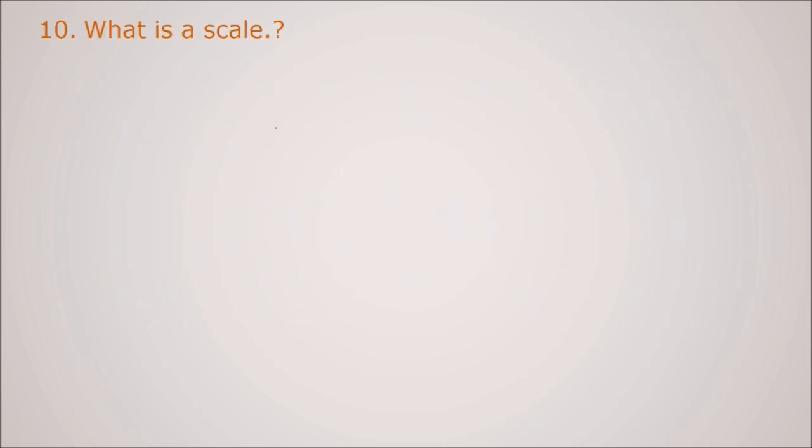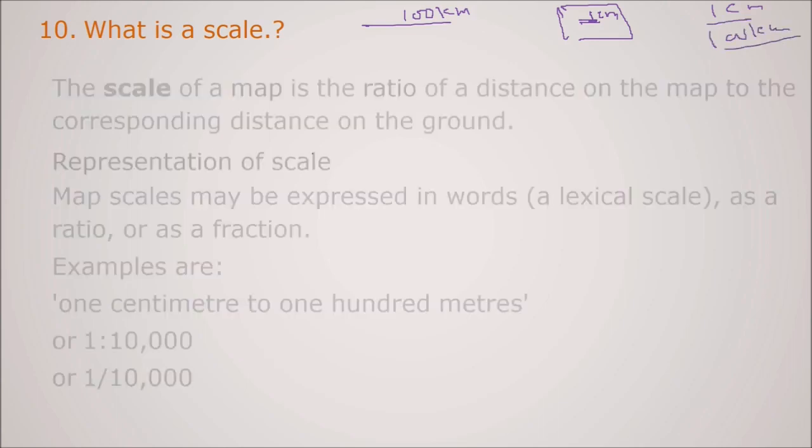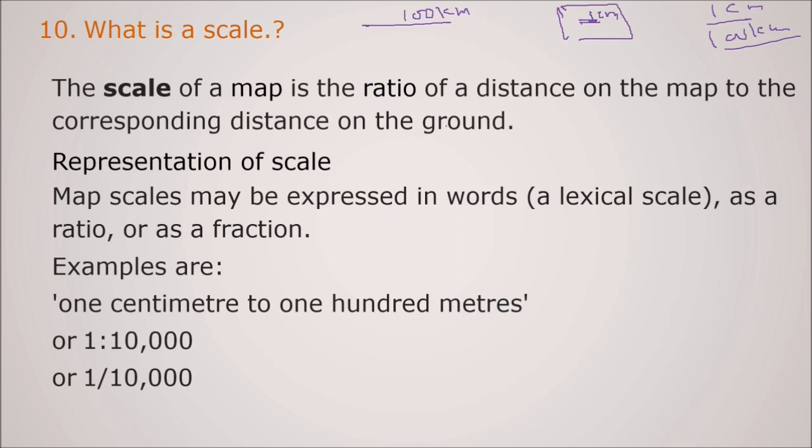What is the scale? Scale. Just assume that you have a map. That map you can hold in your hand, and you see entire country or say entire state, and you see the roads. So the road it may be say 100 km, and you find it just represented by 1 cm or maybe less than that. So 1 cm by 100 km, this is what scale is. So scale of a map is the ratio of distance on the map to the corresponding distance on the ground. In the representation scale, maps can be expressed in words. Say a lexical scale as a ratio or as a fraction. For example, lexically you can write as 1 cm to 100 m, like this. 1 is to 10,000 also. These are other way. 1 by 10,000. This is the most used scale representation.